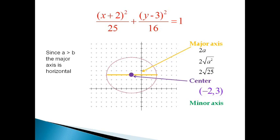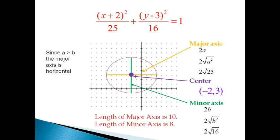Similarly, the minor axis is 2b — take two times the square root of the value under y, which is 16, giving us 8. The minor axis goes through the center, with 4 units on each side. So the length of the major axis is 10 and the length of the minor axis is 8.